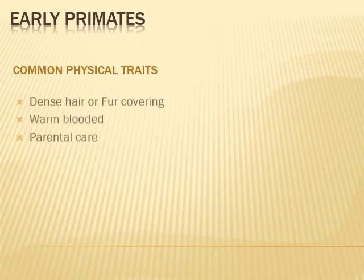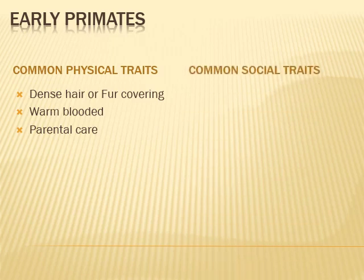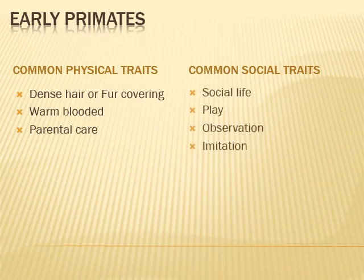Early primates share certain physical and social traits. They had dense hair or fur covering the body and were warm-blooded. They had to nourish and care for their infants for a certain period of time. They also had social interaction and enjoyed active life through playing. They were keen observers and intelligent enough to imitate actions.